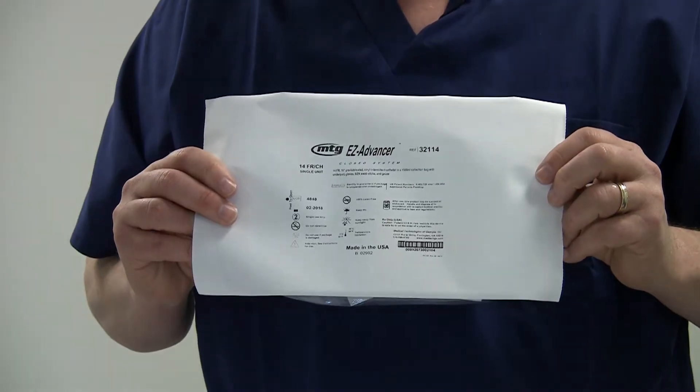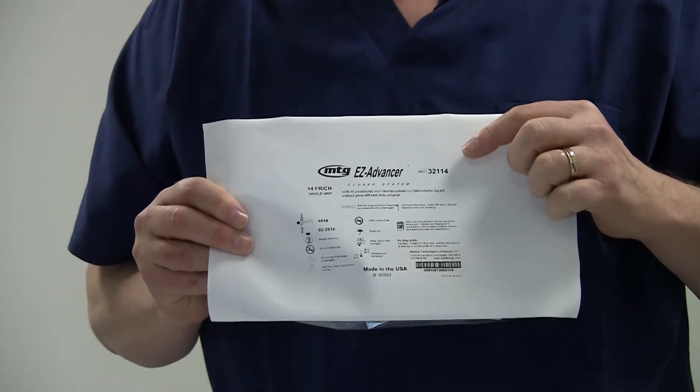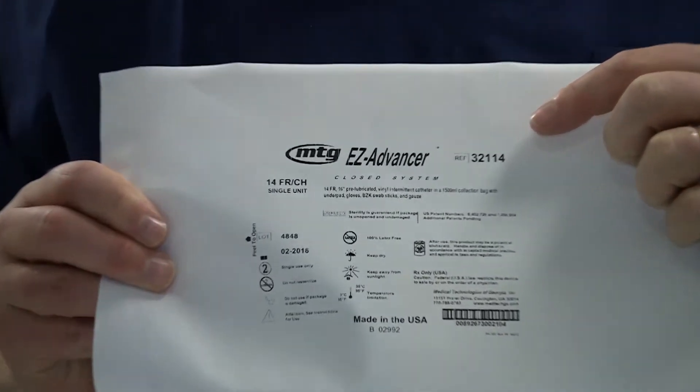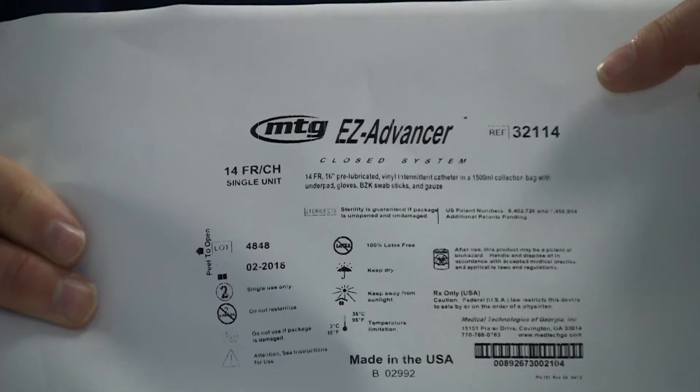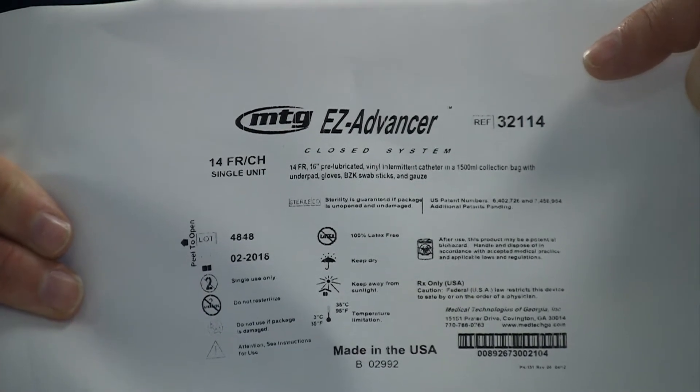Now let's have a look at EasyAdvancer. Keep in mind the last two numbers in the reference number are the French size. In this case, 1-4 would denote a 14 French catheter.